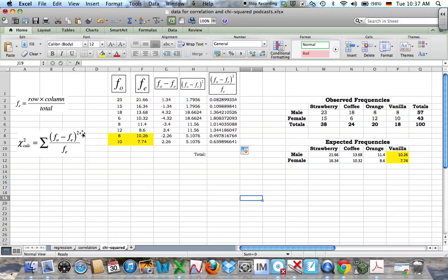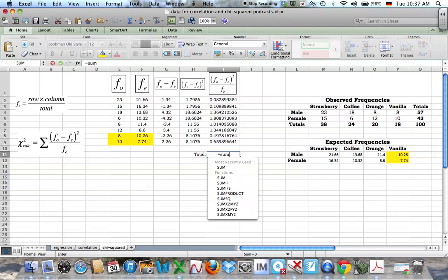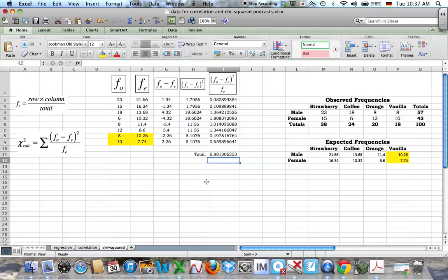And lastly, so we've done all this part. And then remember this funny symbol means to sum. So it means I need to sum all those up. I need to add them all up. So down here, I have equals. And from one of the previous podcasts, you should have remembered that we can use the built-in function sum in Excel. And if I just highlight the ones I want to sum, press enter, it calculates for me. So, there is my chi-squared value.